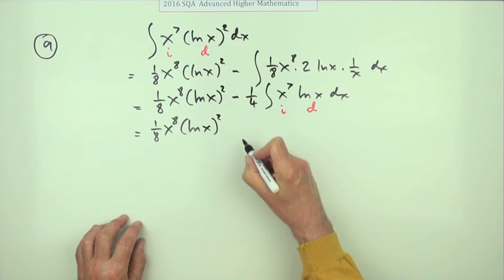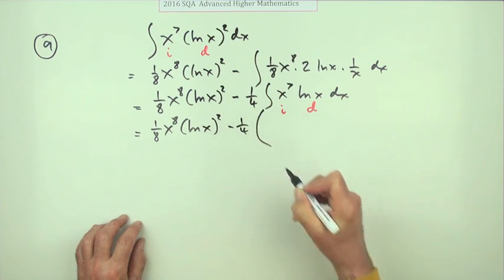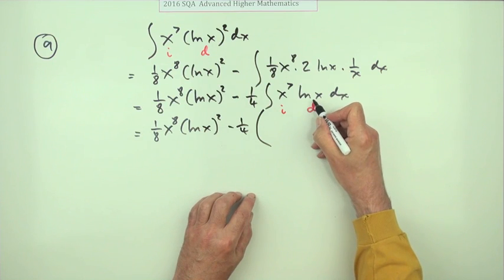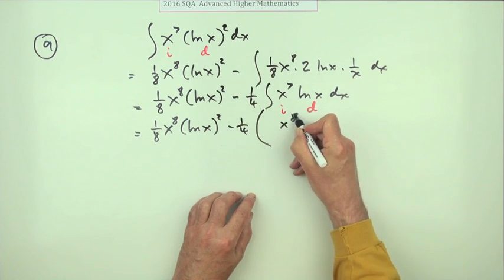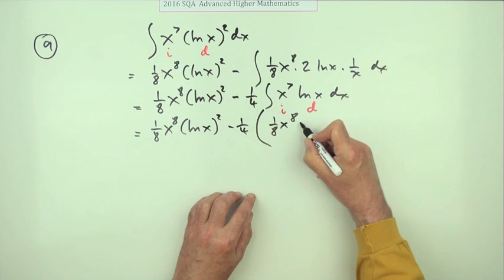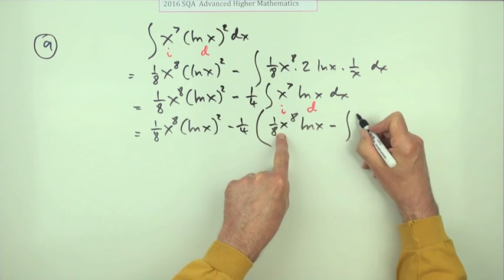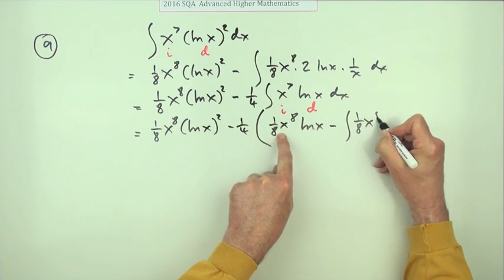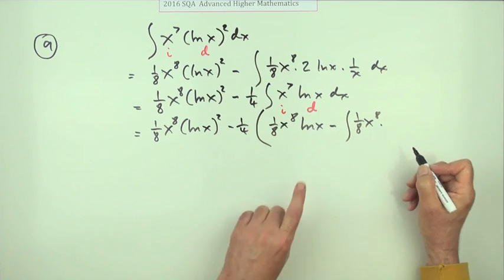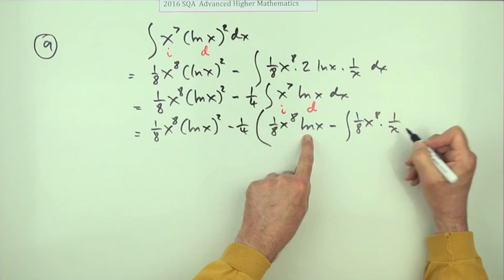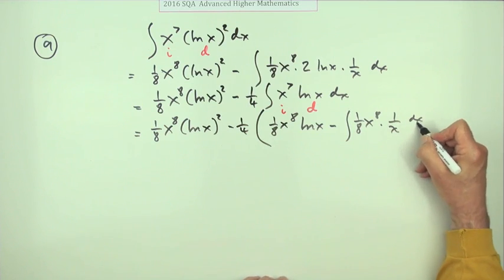ln x squared, ln x squared, minus 1/4 of... right, start again. So integrate first, back up to eight, divide by eight. That's been done so it carries forward. Now differentiate that and look, it just pops down to 1/x dx.